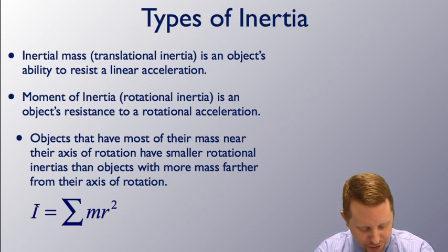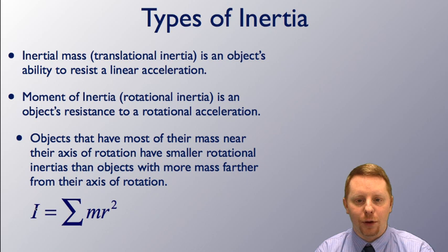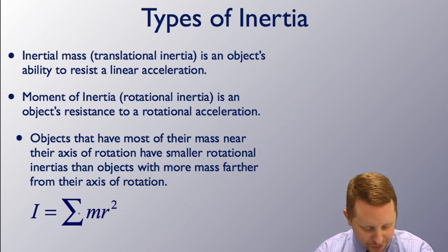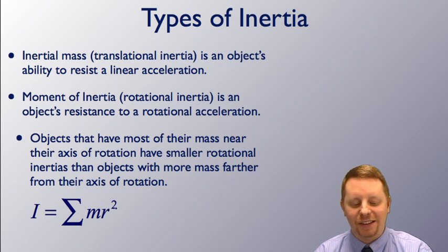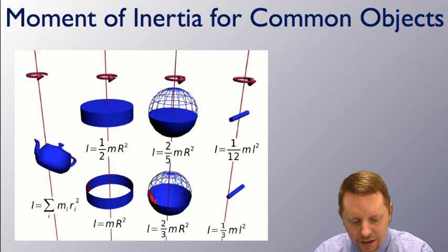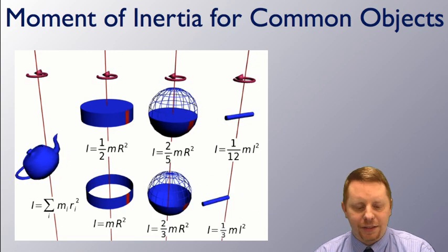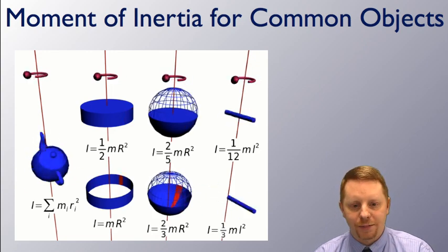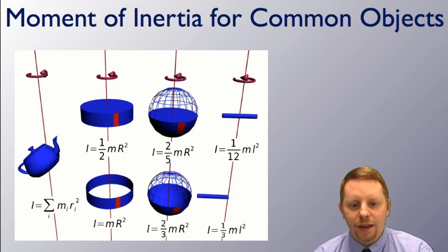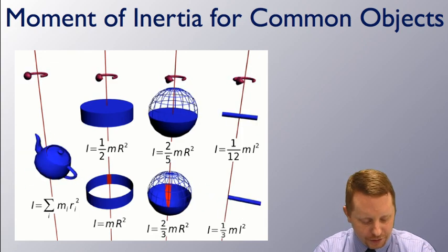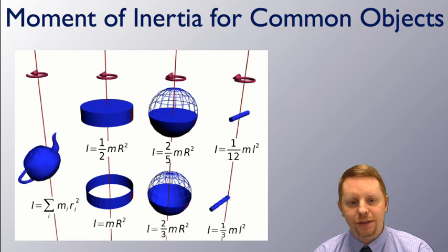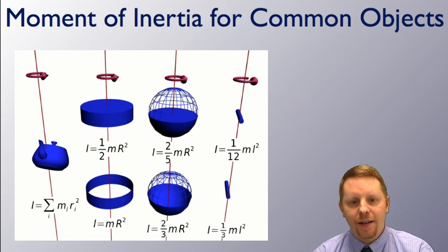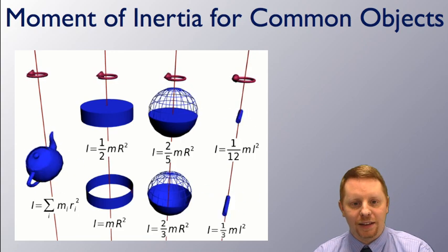This is described by the equation capital I, which is our symbol for moment of inertia, is equal to the sum of mass times the square of the radius, where r is the distance from the axis of rotation to wherever that mass is distributed. Here let's take a look at the moment of inertia for some common objects. On the left we have the teapot, showing that for any object you can do the sum of mr squared. The other objects have those calculations done for you.